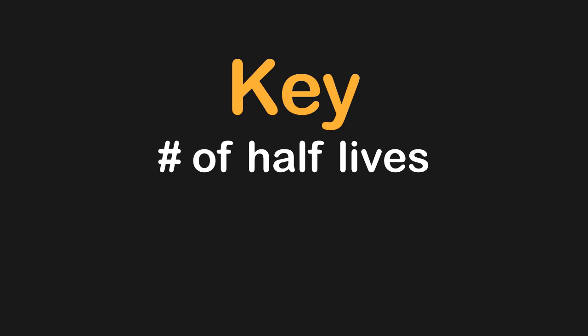The key to this approach is finding the number of half-lives. Why does this matter? The number of half-lives will tell us how many arrows we need to draw. So for example, if something underwent two half-lives, then we would draw two arrows. These represent the halving points on this particular problem.